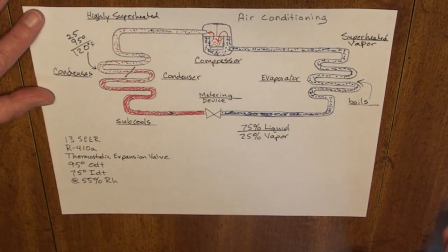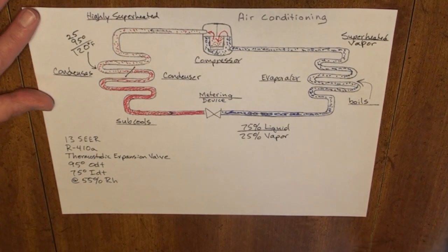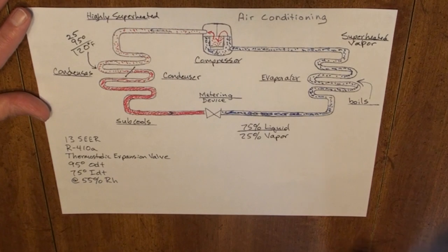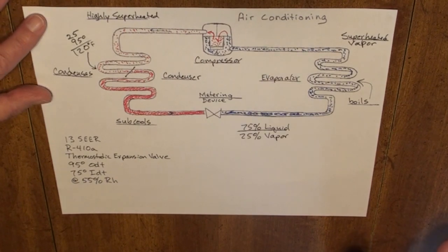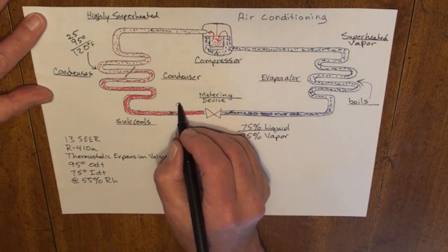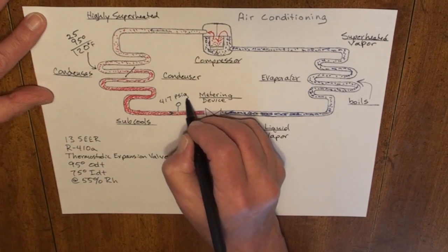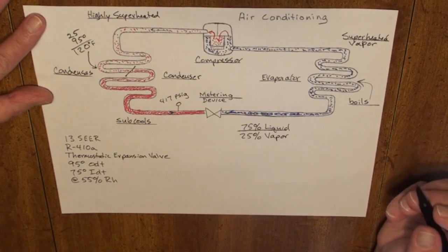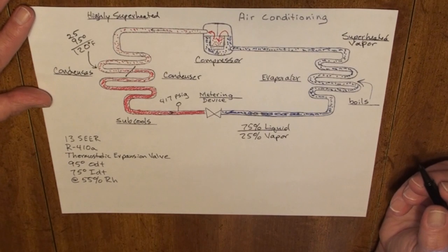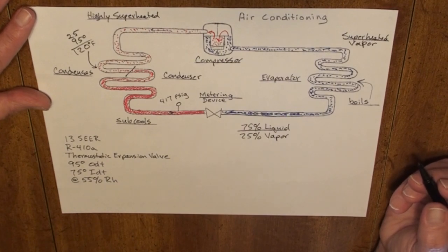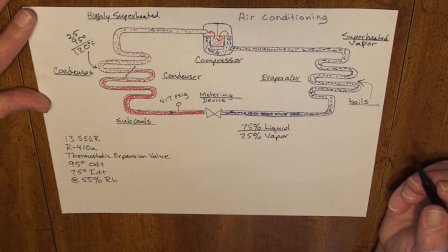Now, something that is important about R410A is the operating pressures are much, much higher than what you would find with the R22 systems. On a 95 degree day, at 120 degrees condensing temperature, the R410A on the high side would be at 417 PSIG. Significantly higher pressures. Never use gauges that are rated for R22 on a 410A system. Not only will it damage the gauge, but it's also very dangerous to hook those lower rated hoses up to these high pressures. Always use gauges that are rated for use with R410A.